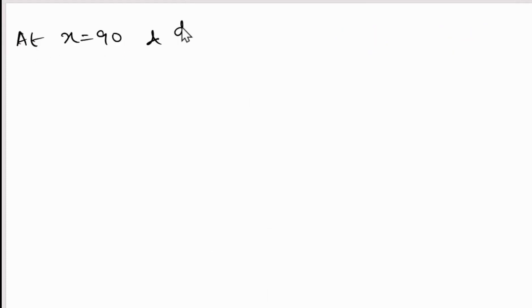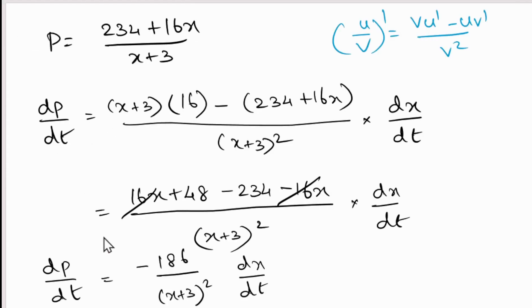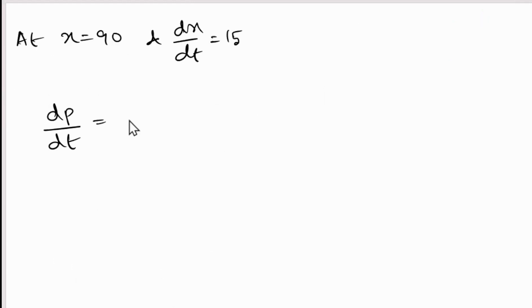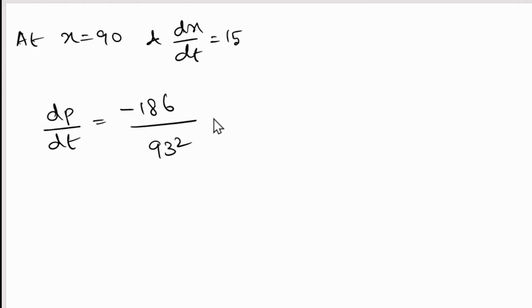Now substituting x = 90 and dx/dt = 15: dp/dt = -186 / (90 + 3)² × 15 = -186 / (93)² × 15.